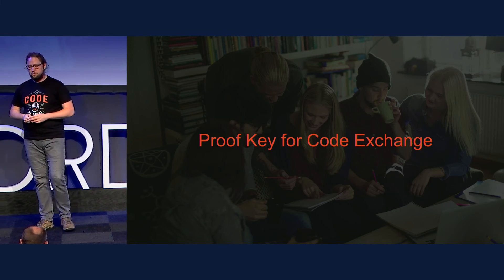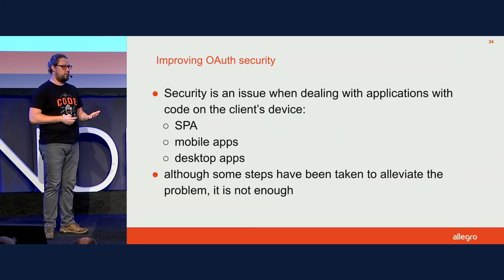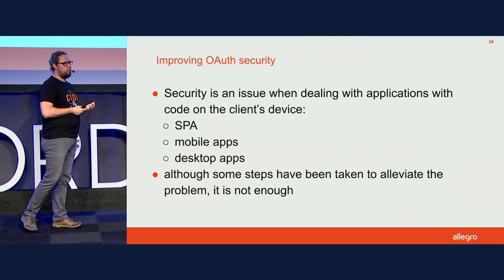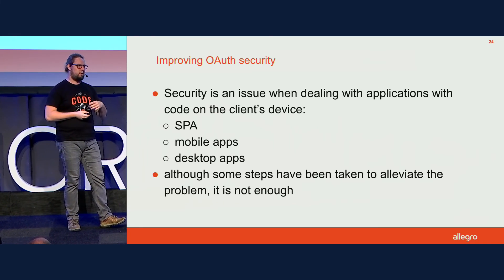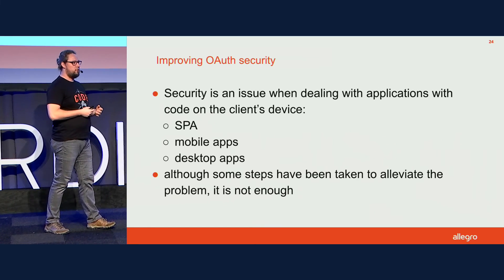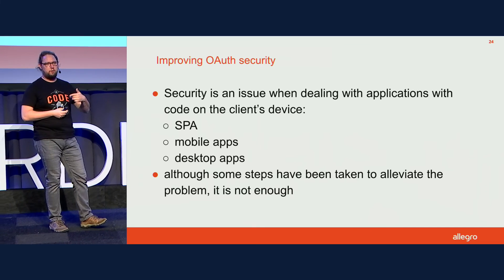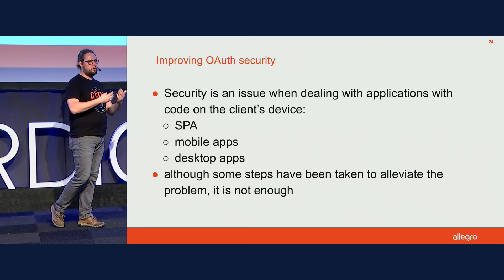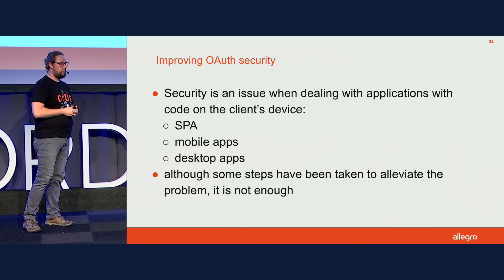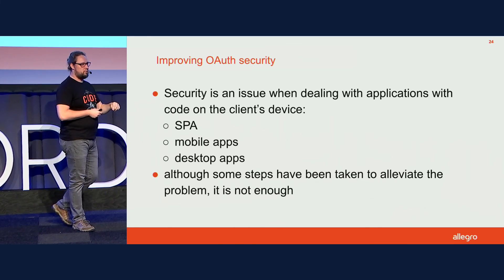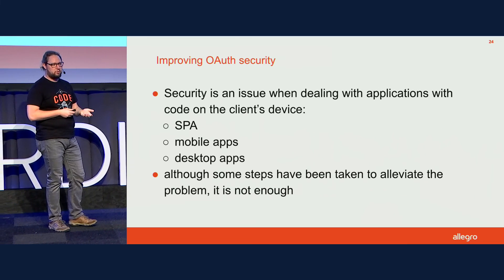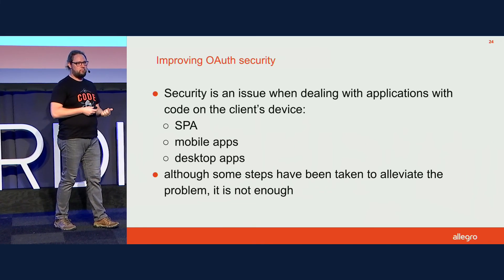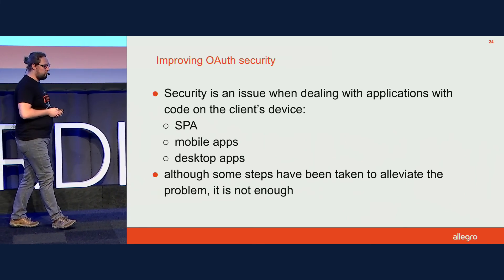The third extension, proof key for code exchange (PKCE), deals with security and adds more security features to OAuth. It solves a problem for clients whose entire codebase is available to users — single page applications, mobile apps, or desktop apps installed on user devices. In the original OAuth, the implicit grant type was used for these situations, but it is not secure and has been deprecated. Now the authorization code flow is recommended, but it still has security issues that can be exploited.